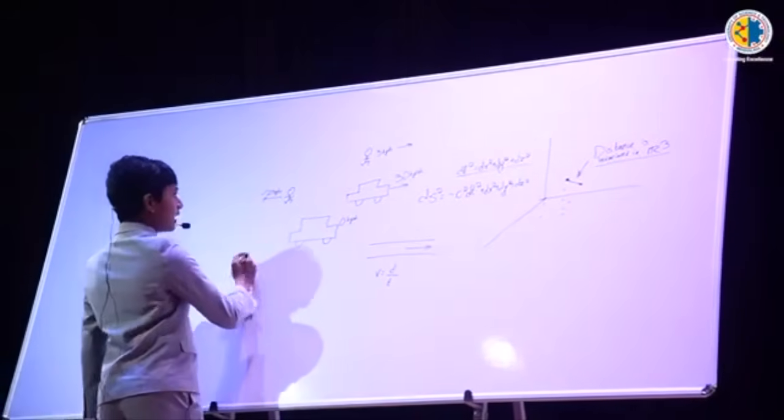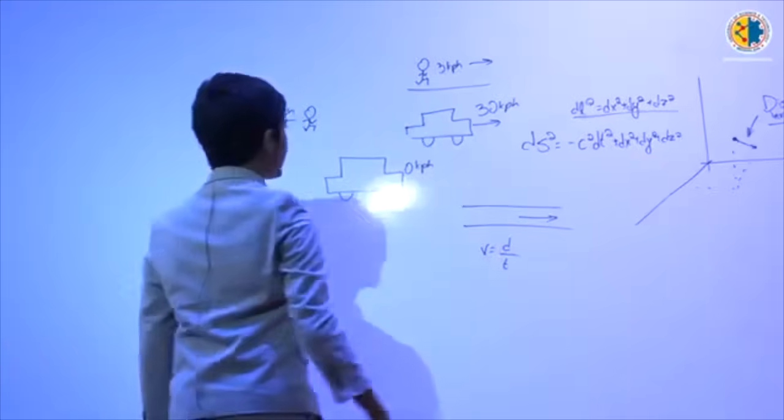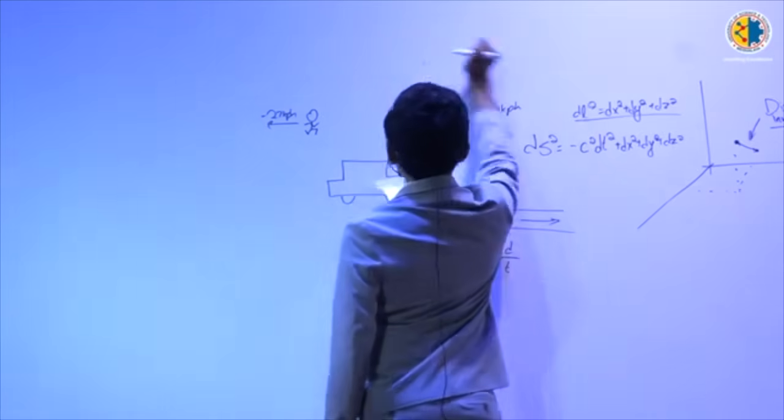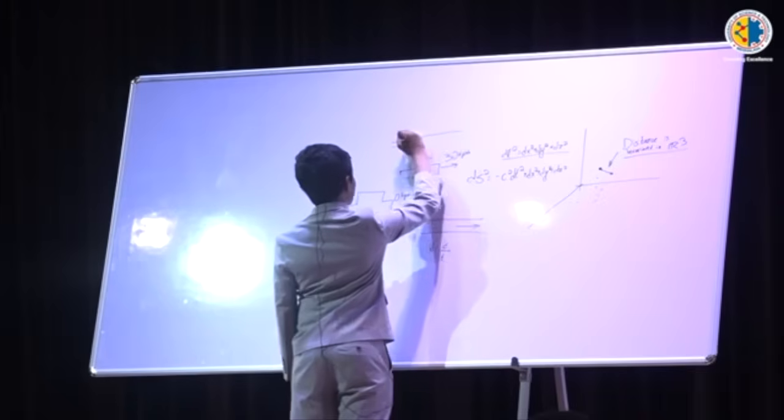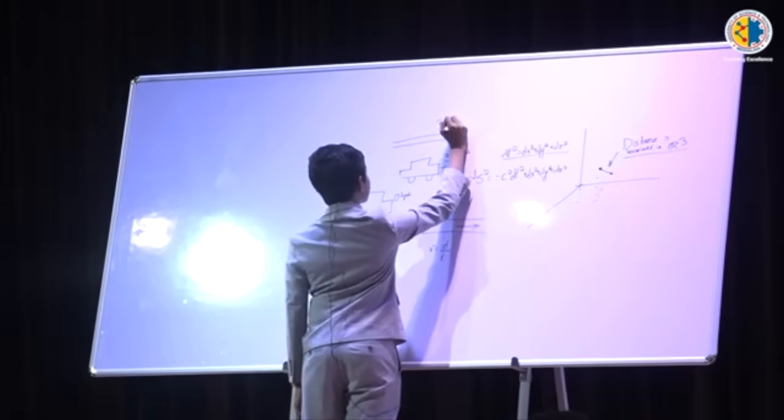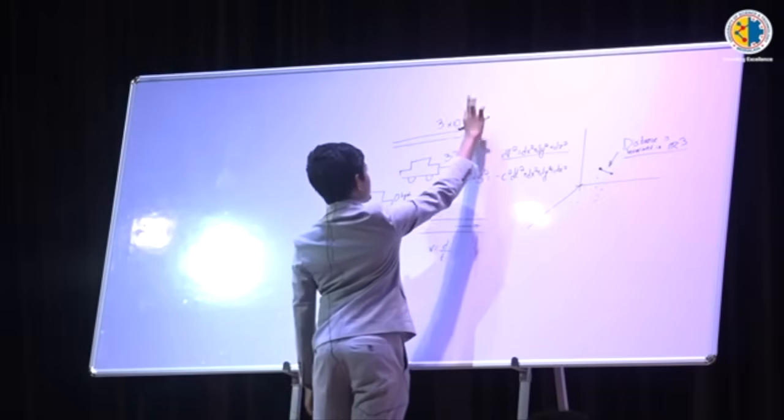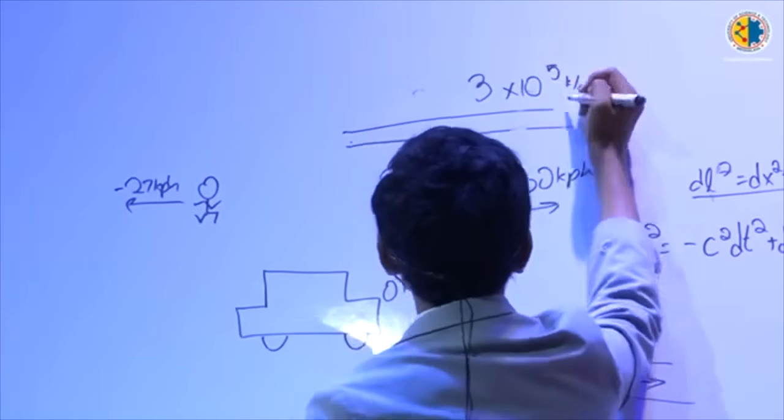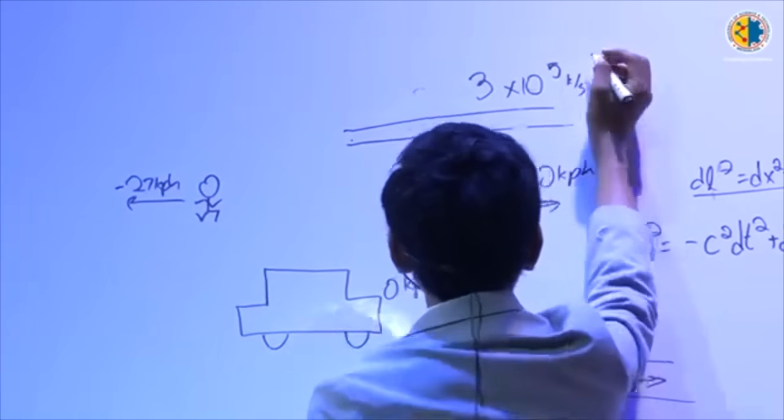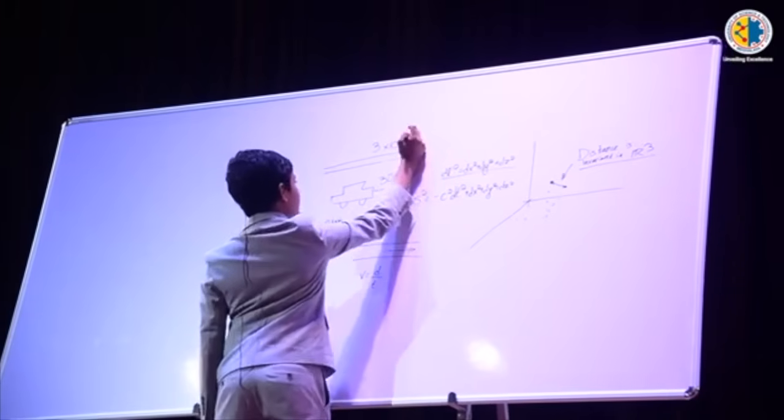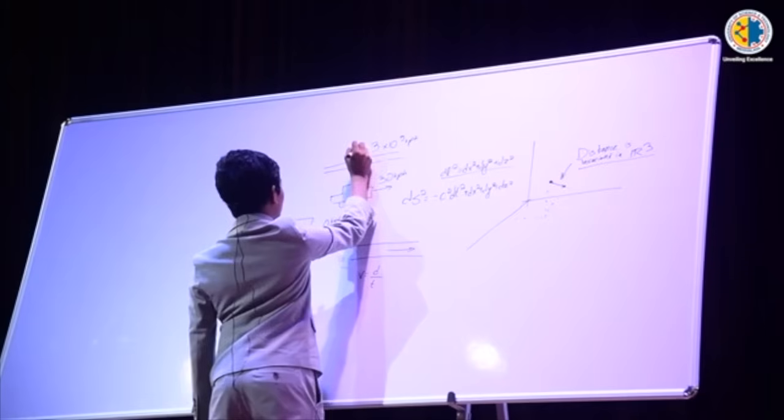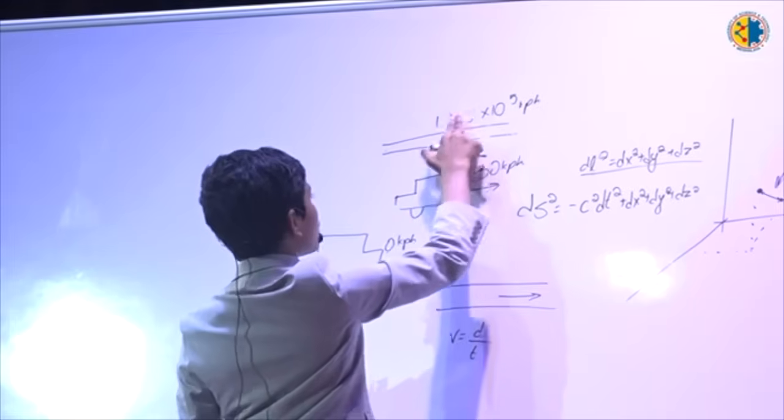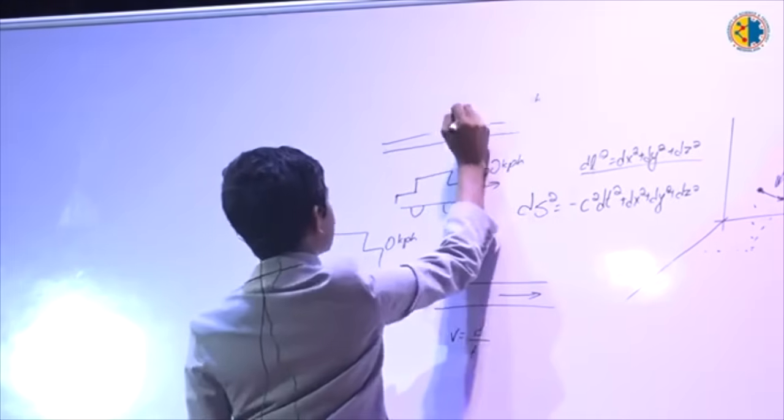However, this is not the case with light. If you have a guy running over here at 3 kph, totally fine. But now, let's say we have light. Light is going to be moving here at 3 times 10 to the 8 meters per second. Now, converting that into kilometers per hour, first we have 3 times 10 to the 5 kilometers per second. And then, all we have to do is multiply this by 3600 so that we get hours. And then, all we get is 10800 times 10 to the 5 or 1.08 times 10 to the 9 kph.